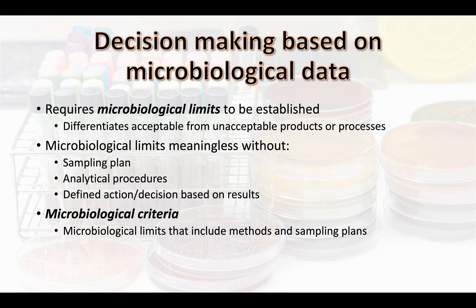Or, if we have a positive indicator test post-processing in our final product, this may initiate reprocessing or rework on this product. When we have microbiological limits that include the sampling plan, analytical procedures, and define the action or decision based on the results, this is termed microbial criteria. Therefore, the question we should be asking is: how can I establish the microbial criteria for my product?